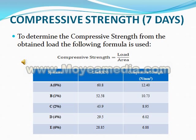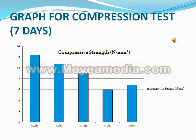Compressive Strength at 7 days: Formula — Compressive Strength = Load / Area. Specimens A (0%), B (1%), C (2%), D (4%), E (6%). Load in kN: 60.8, 52.58, 43.9, 29.5, 28.85. Compressive Strength in N/mm²: 12.40, 10.73, 8.95, 6.02, 5.88. Graph for Compressive Strength at 7 days shown.